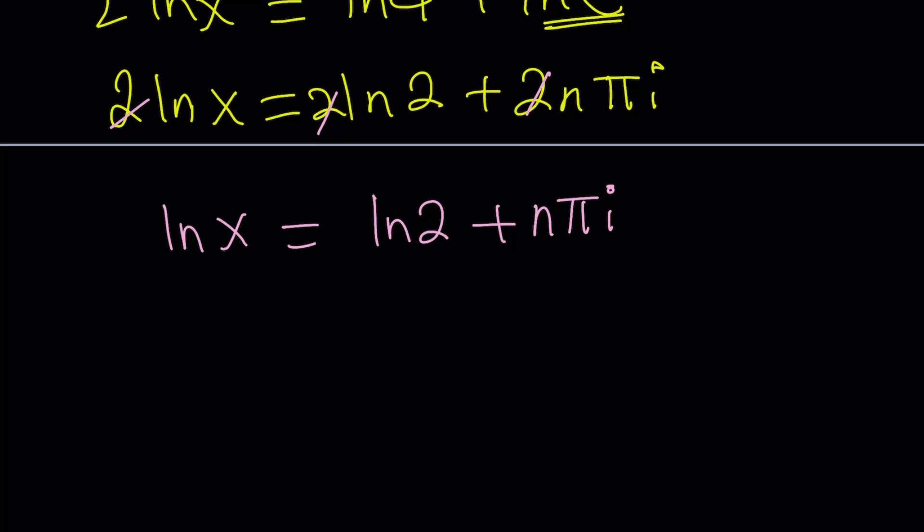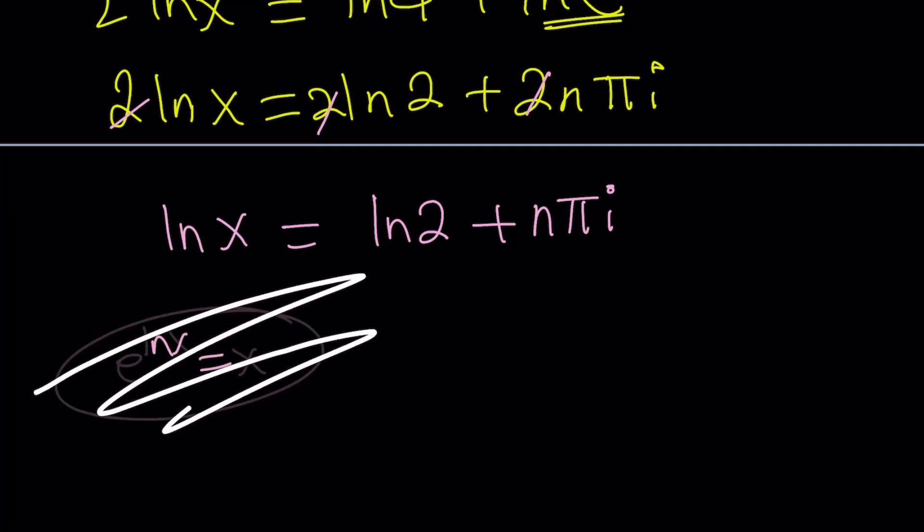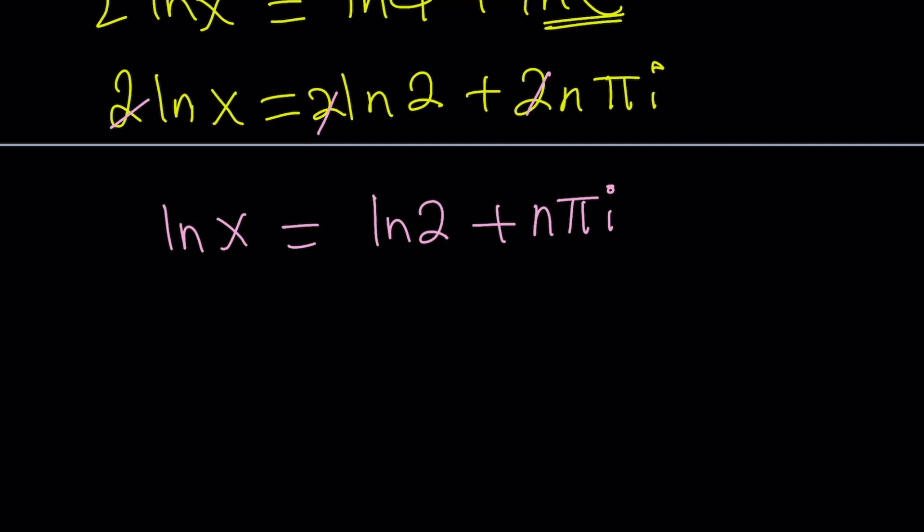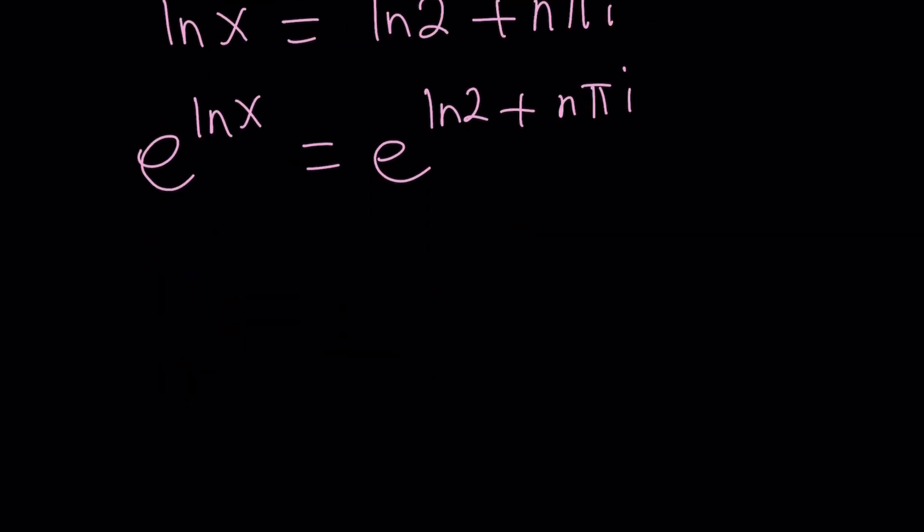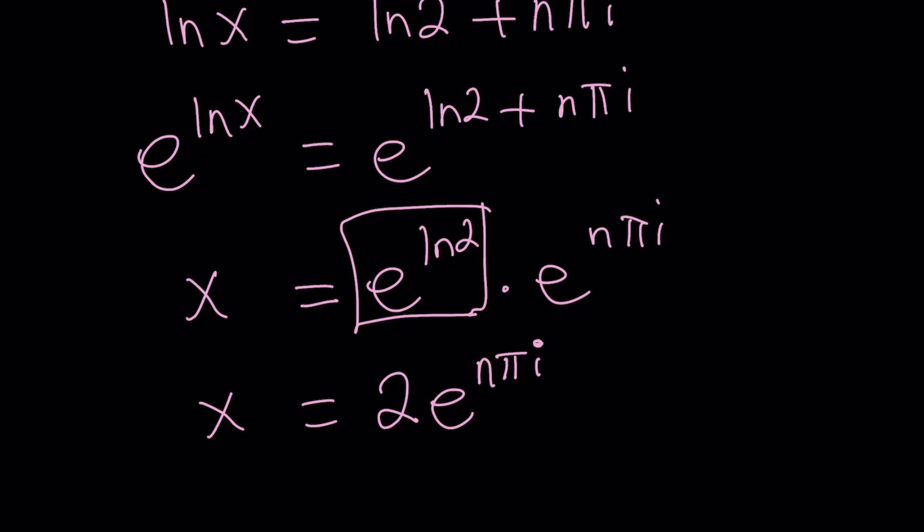So now, at this point, obviously, you want to solve for x. You don't want to leave it at ln x. So it would make sense if you can get x from here. And how do you get that? By using the identity e to the power ln x equals x. So by using that identity, we can basically do e to the power both sides. e to the power ln x equals e to the power ln 2 plus n pi i. Now, e to the power ln x is just going to be x. And right-hand side, we can split it up into e to the power ln 2 times e to the power n pi i. And obviously, e to the power ln 2 is 2. So from here, x is going to be 2 times e to the power n pi i.